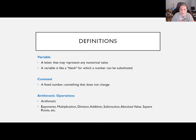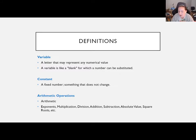Then we've got arithmetic operations. Arithmetic is basically the math you learn in elementary school — adding, subtracting, that sort of thing. Some more advanced operations include exponents, absolute values, and square roots. Those are things that you do to numbers to combine them and come up with another number.